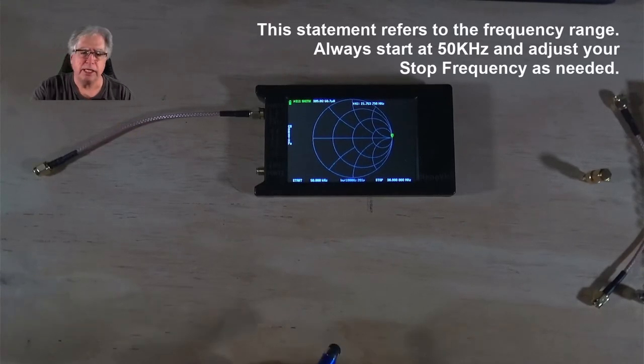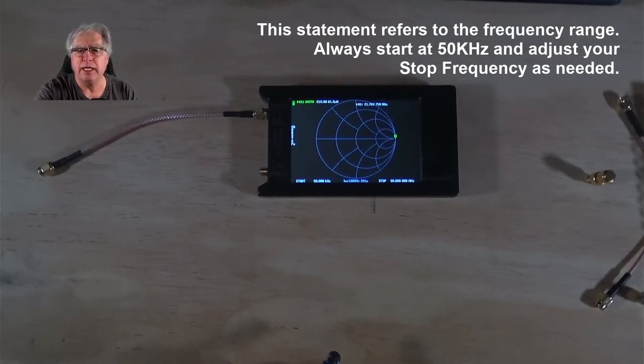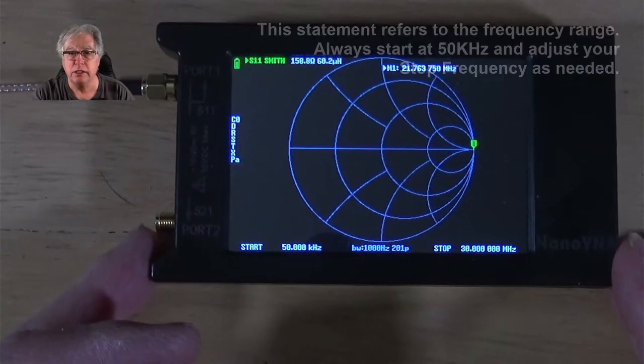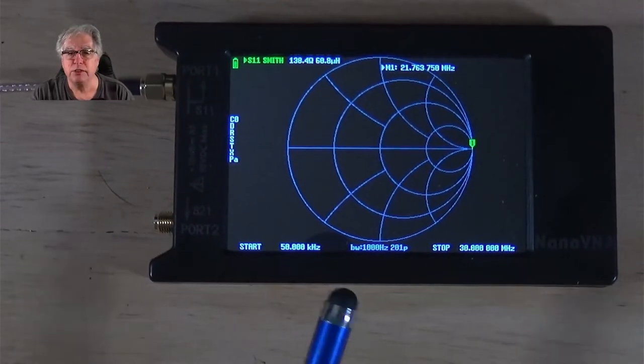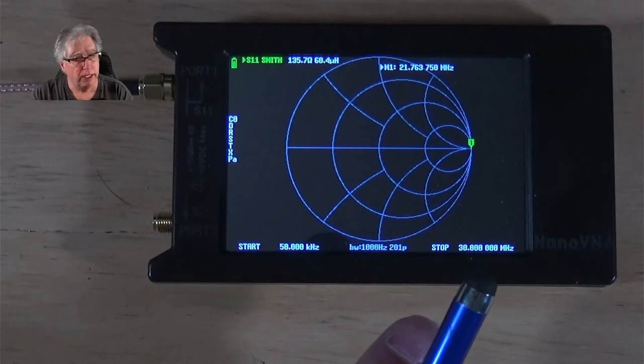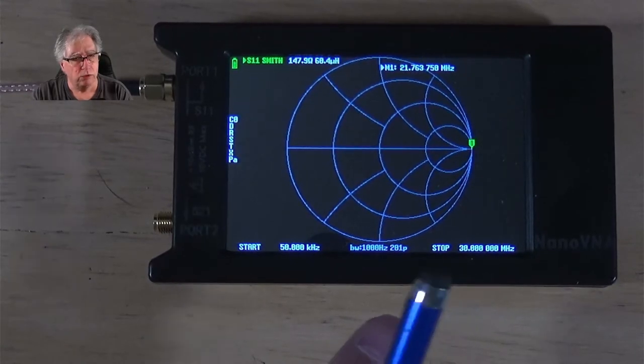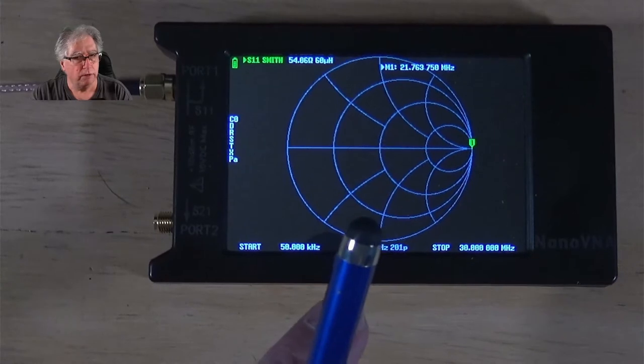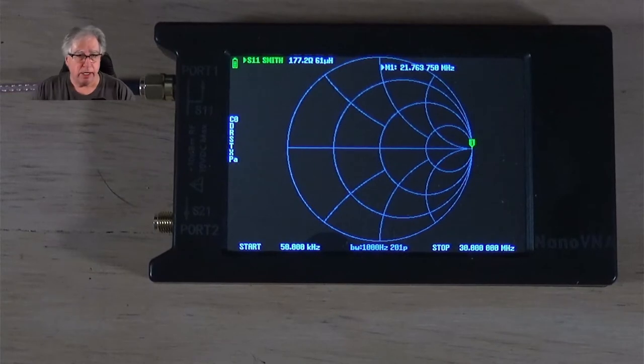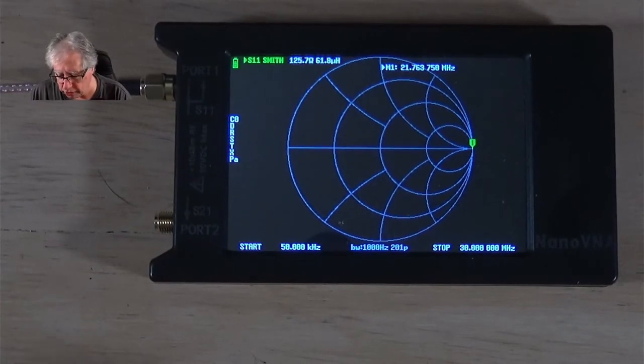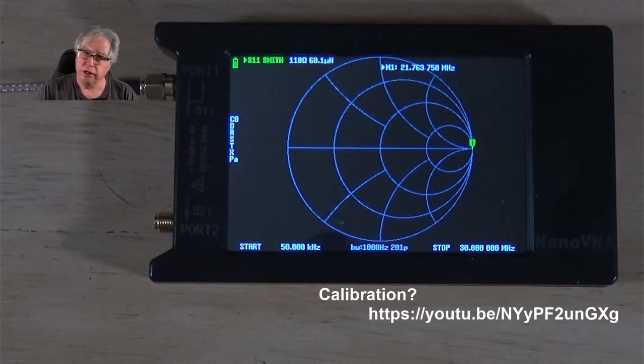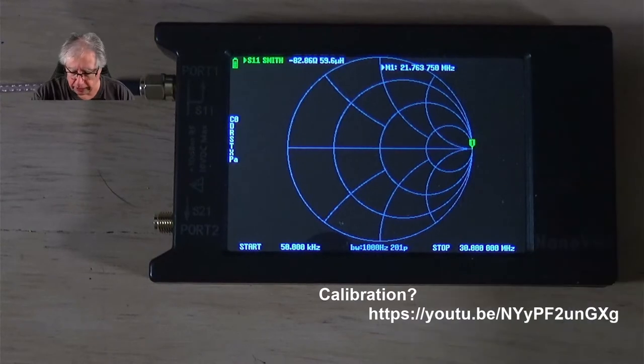On this particular setup, we're going to be able to use 50 kilohertz by 30 megahertz in order to make our calculation with information from the Smith chart. Now, calibration is really important on this. I calibrated this off screen. I encourage you to calibrate each time you turn this thing on. You can always check your calibration with the Smith chart fairly easy.